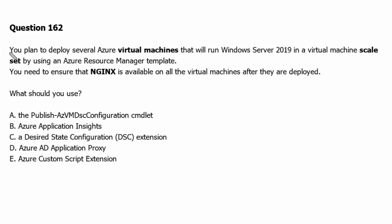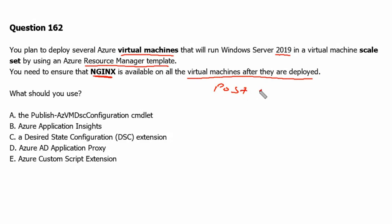Question 162: You plan to deploy several Azure virtual machines that will run Windows Server 2019 in a virtual machine scale set using an Azure Resource Manager template. You need to ensure that NGINX is available on all virtual machines after they are deployed. So we need to perform a post-deployment task, and we need to identify what ways we can conduct these post-deployment tasks. Let's go to learn.microsoft.com to understand it better.